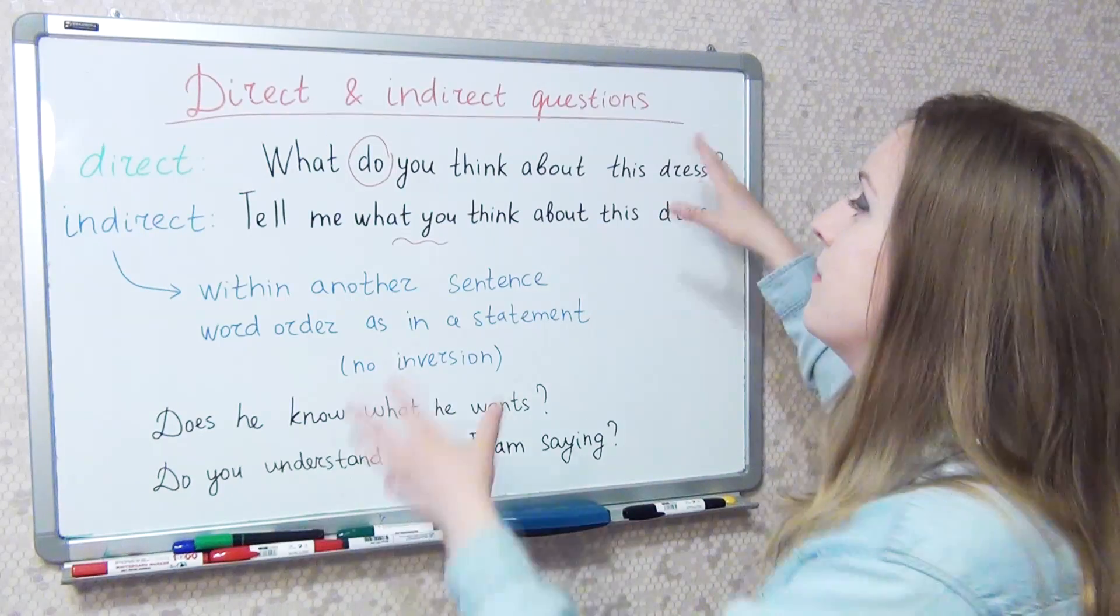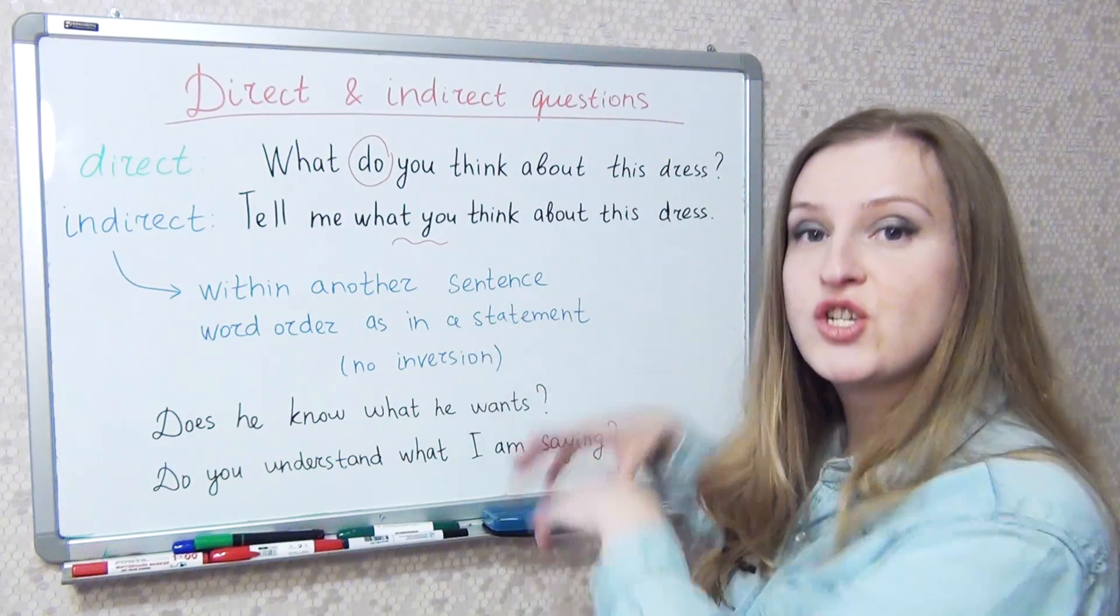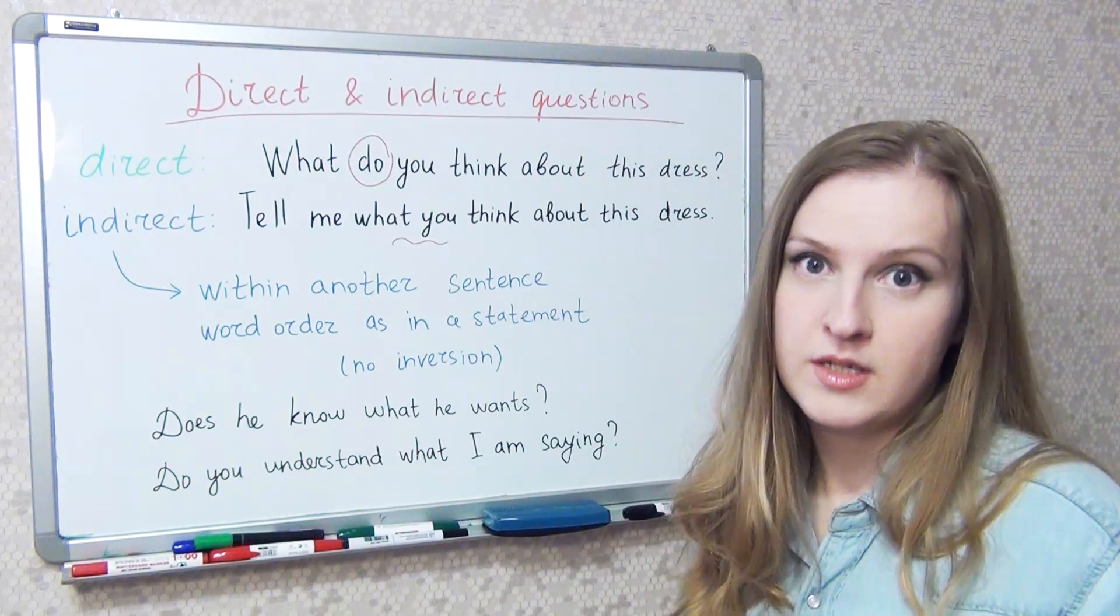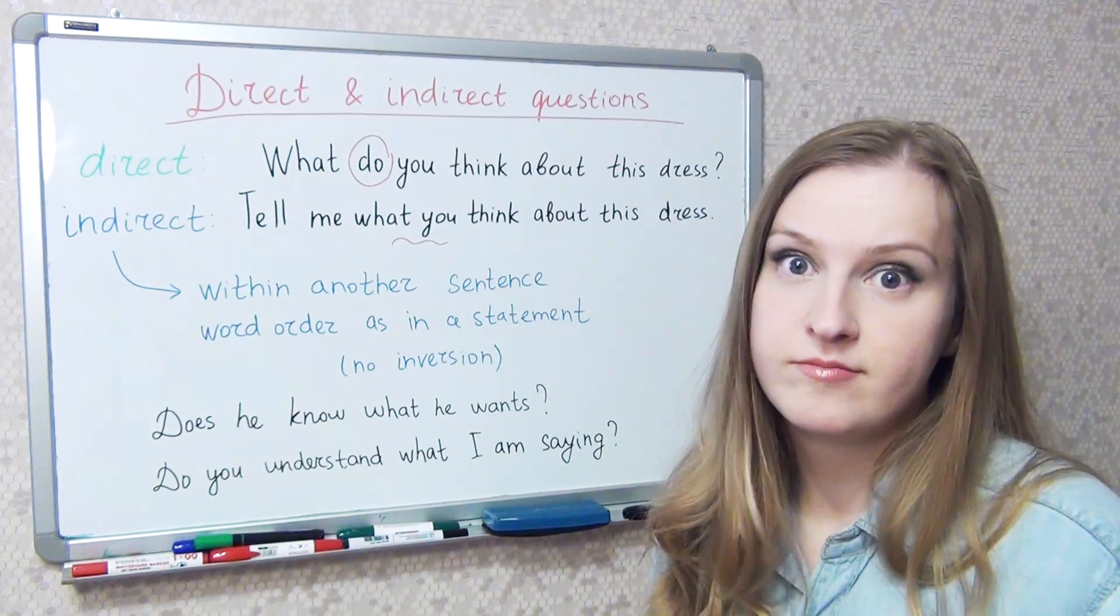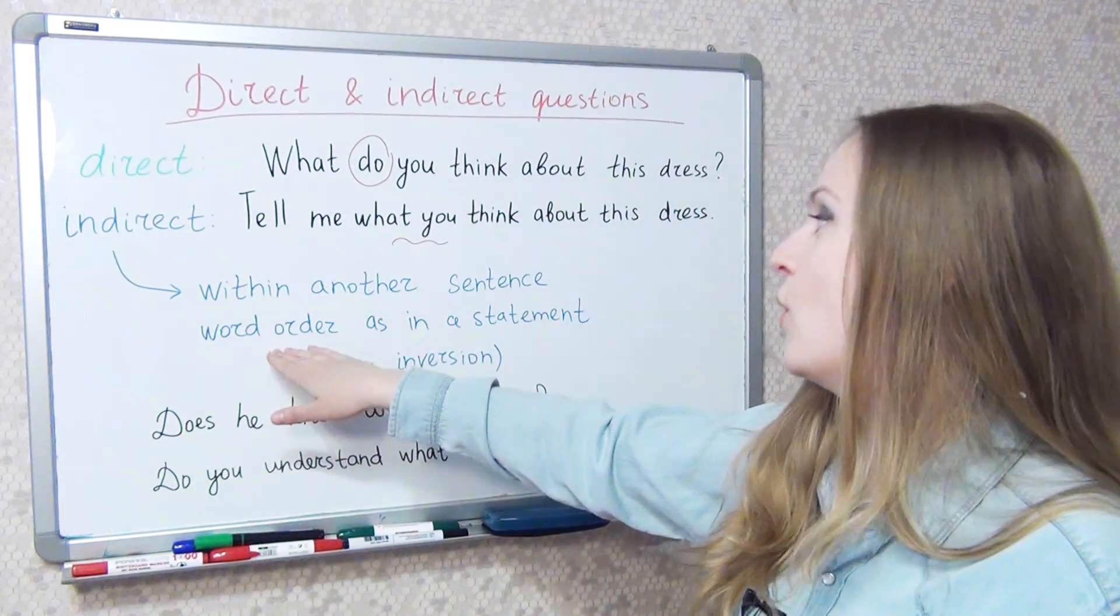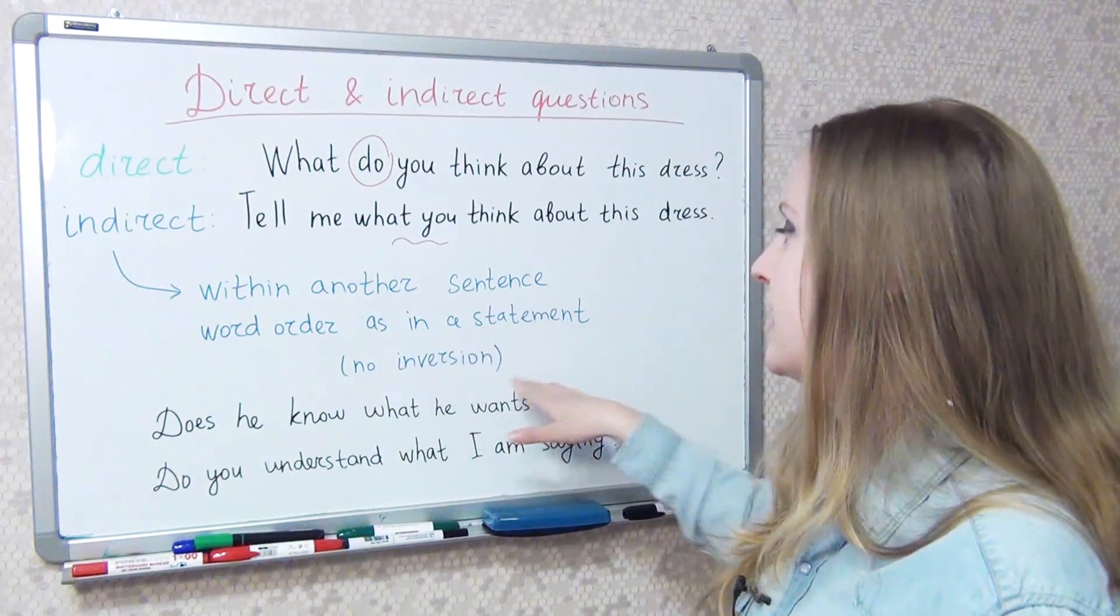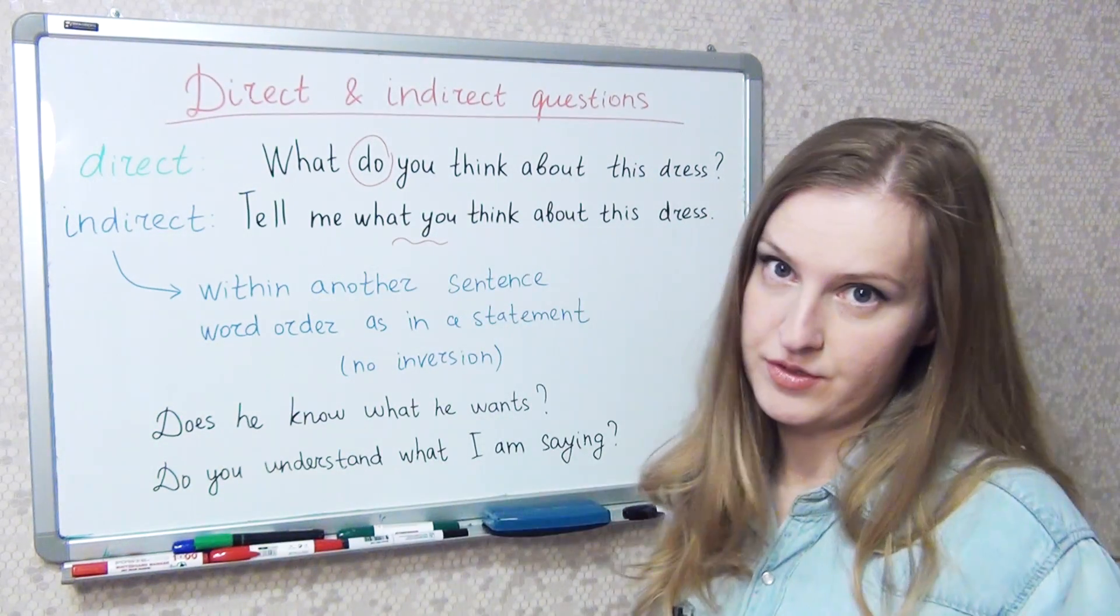What do you think about this dress? But the question changes its form, it loses inversion. So the word order is as in a statement in indirect questions.